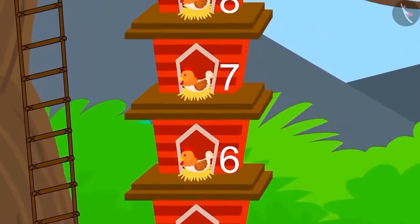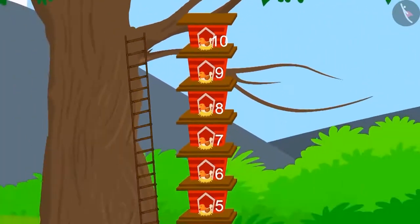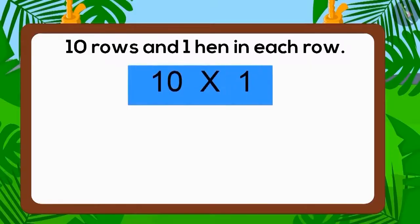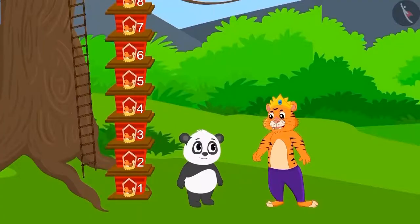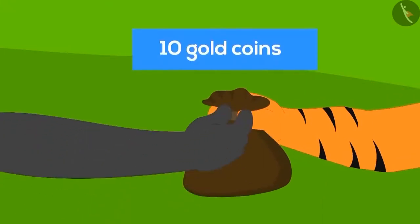Now, was the total number of hens in Golu's house ten? How will we write it in the form of multiplication? Ten multiplied with one. Ten multiplied with one is ten. Golu had built the house perfectly. The king gave ten gold coins as the prize.